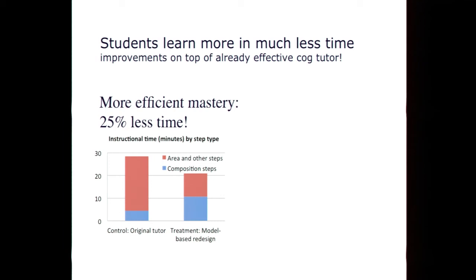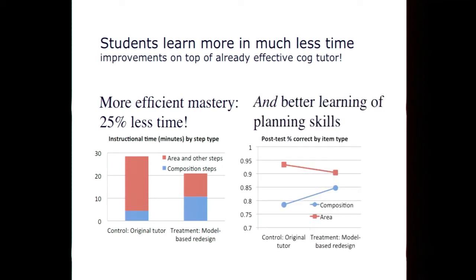But of course, we want to see whether the outcomes are at least as good. And what we see is particularly on the harder planning problems, the treatment is actually doing better in less time. So we've closed the loop. We used data to make a discovery that led to a design. We did an A-B test using that design. We get better outcomes. This, if you kind of combine the time and the outcome, it's about a 1.5 improvement in learning efficiency.